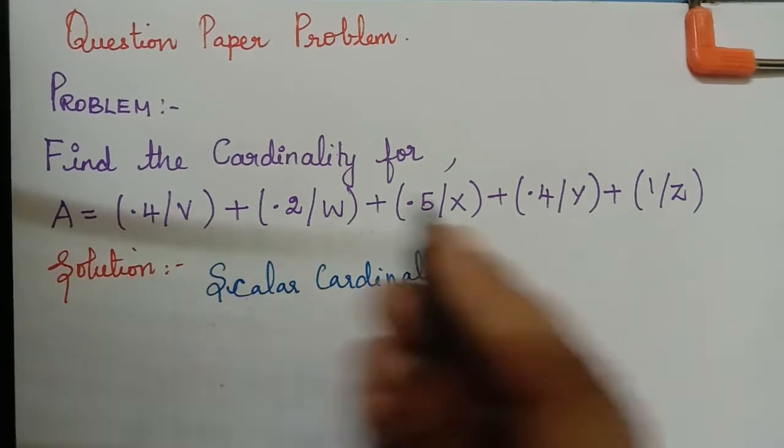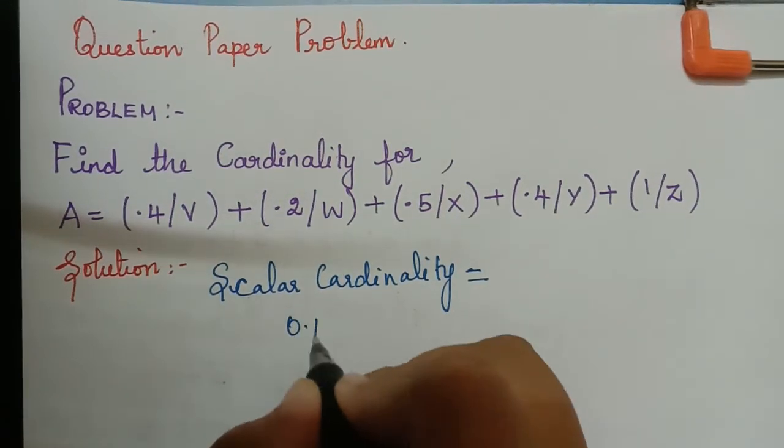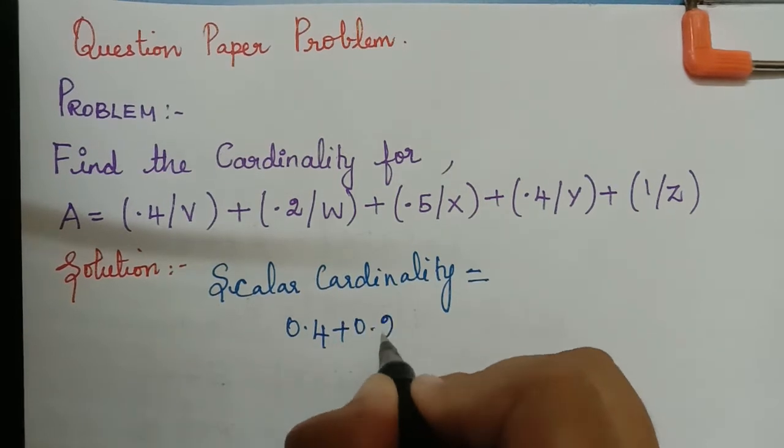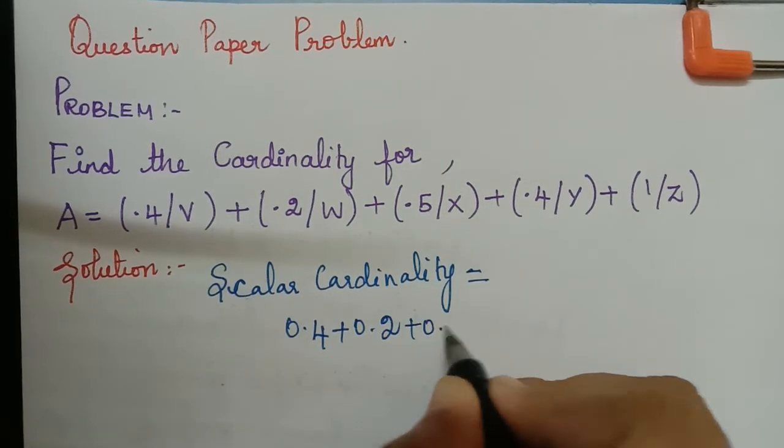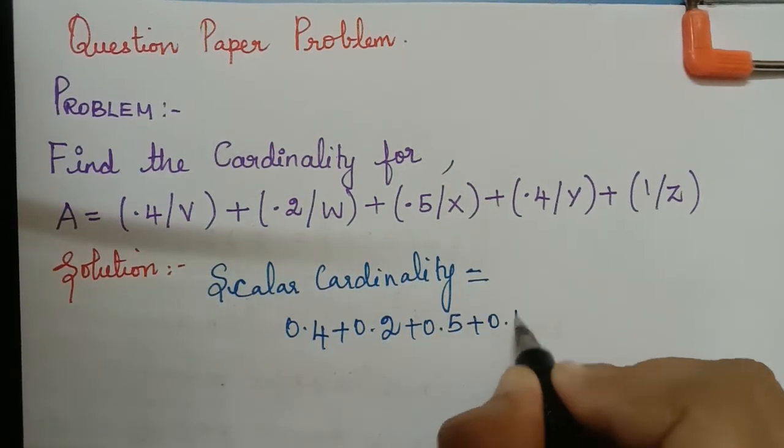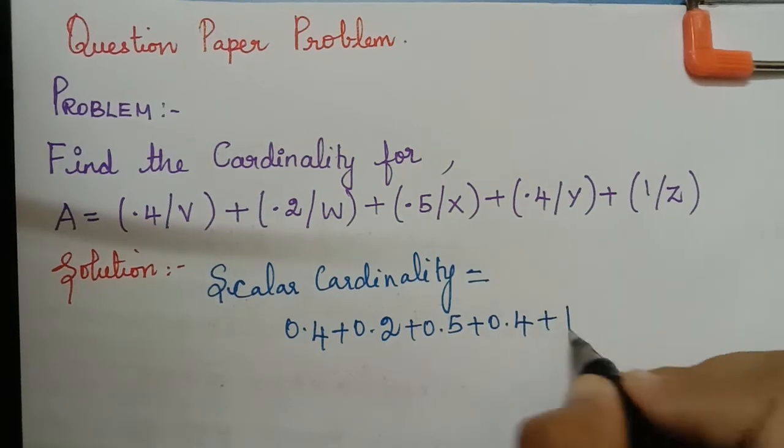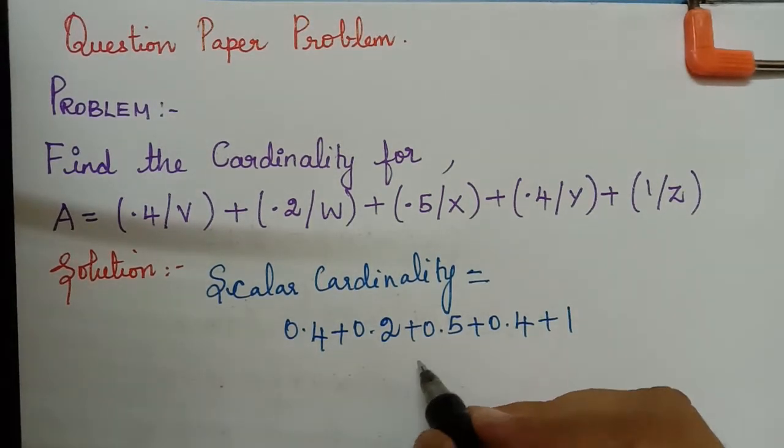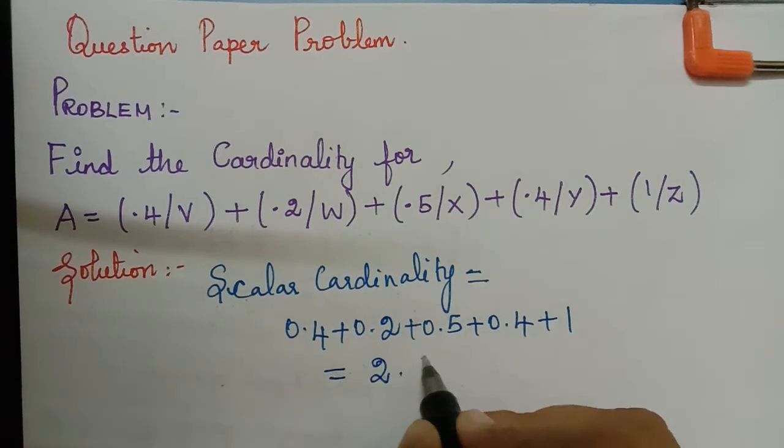So we have to add 0.4 plus 0.2 plus 0.5 plus 0.4 plus 1. So this gives us the scalar cardinality which is equal to 2.5.